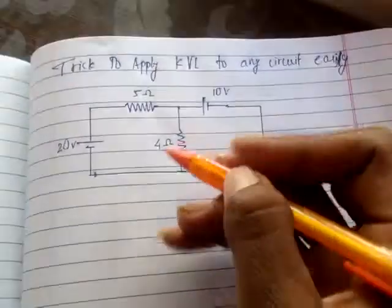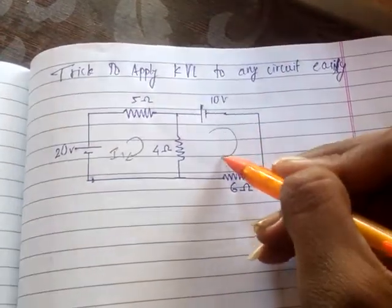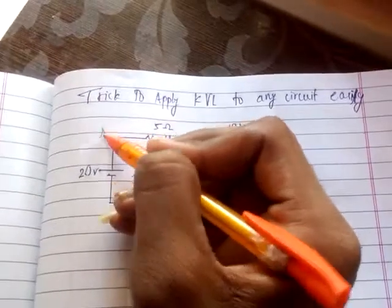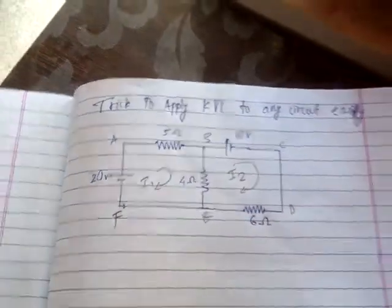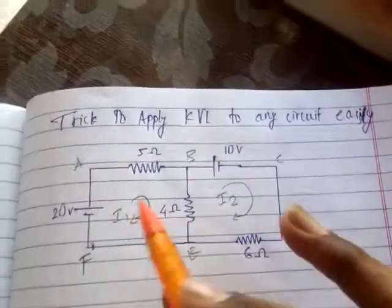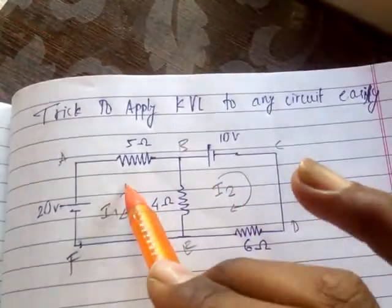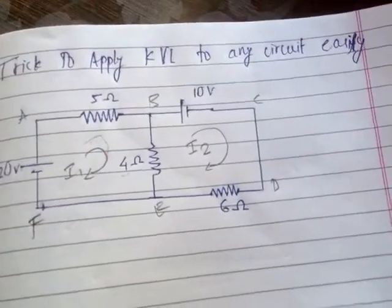Firstly, in the given circuit you need to find out how many loops there are. Here we see two closed loops — we name them I1 and I2. You can also name the nodes if required: A, B, C, D, E, and F. Once you have identified the loops, you give them a clockwise direction. If you give clockwise direction to the first loop, you must give clockwise direction to the other loops as well.